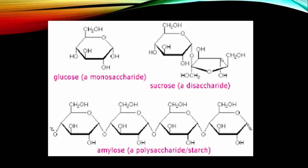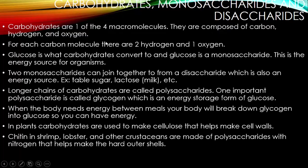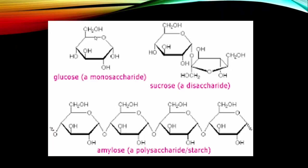Let's take a look at a monosaccharide, a disaccharide, and a polysaccharide. Here we have glucose, which is a sugar molecule. I know it's a carbohydrate because I see carbon, hydrogen, and oxygen — carbohydrates are composed of carbon, hydrogen, and oxygen. When I have two of these monosaccharides together, it's no longer called glucose — it's called sucrose. Sucrose is two sugar molecules, and that is a disaccharide.